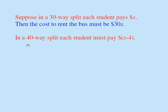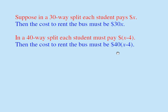So in case of a 40-way split, since each person pays X minus $4, the cost to rent the bus can be written in this manner. Each person pays X minus $4 and there are 40 people, so the total cost must be 40 times (X minus 4).